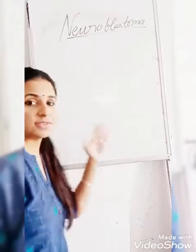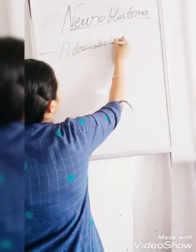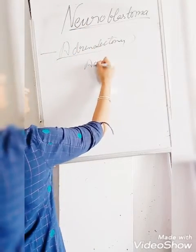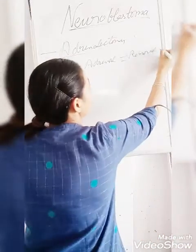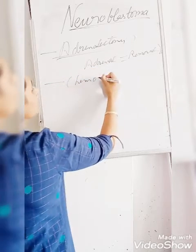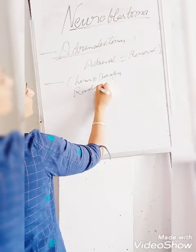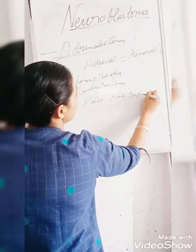For treatment, as this is a very dangerous and aggressive malignant tumour, we will first give drug therapy including doxorubicin, carboplatin, and cyclophosphamide. If these drugs don't work, we will go for adrenalectomy — that is removal of the adrenal gland. After surgery, we will go for chemotherapy, radiotherapy, and folic acid supplementation.